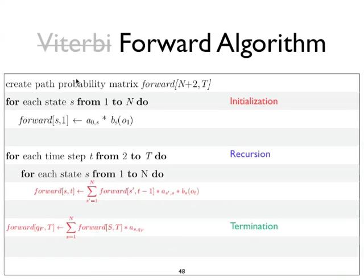However, the only difference in the Forward Algorithm is instead of taking maxes, we're going to sum over all possible paths. We're doing this so that we can assign a likelihood to the English sentence that we are looking at.